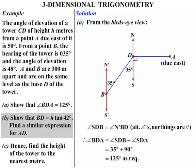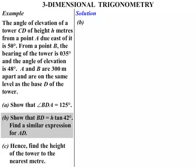Moving on to part B. We need to show that BD equals H tan 42 degrees, and find a similar expression for AD. Well to do that we'll need to start with drawing the three dimensional diagram. So if we consider this our north, east, south and west, we're normally looking at it like that.